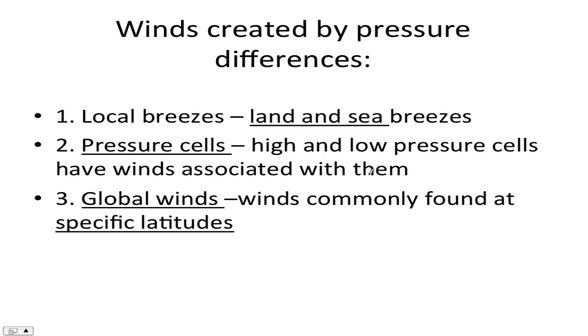Now, scientists like to classify wind based on the area the wind impacts. Land and sea breezes really only affect small areas, like an ocean or the beach by a lake. High and low pressure cells create wind on a somewhat larger scale. And global wind patterns, well, they impact large sections of the earth.